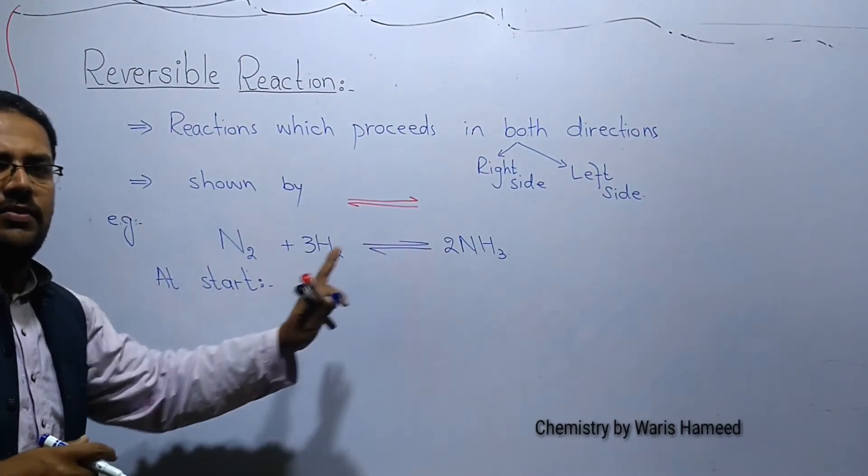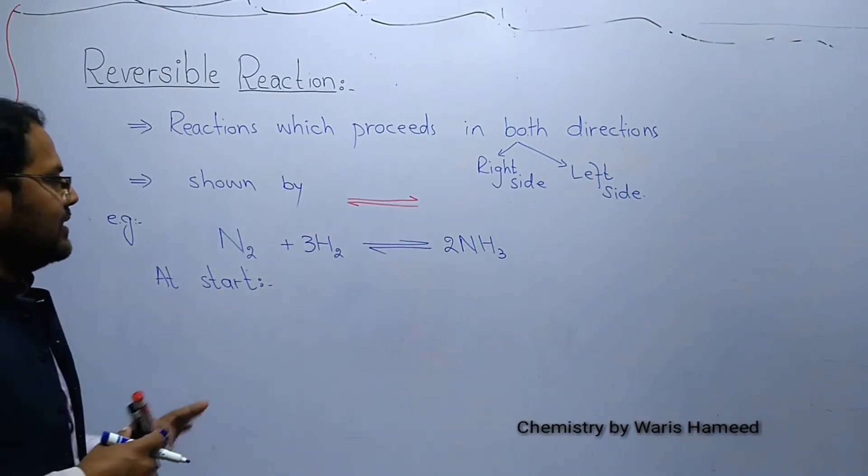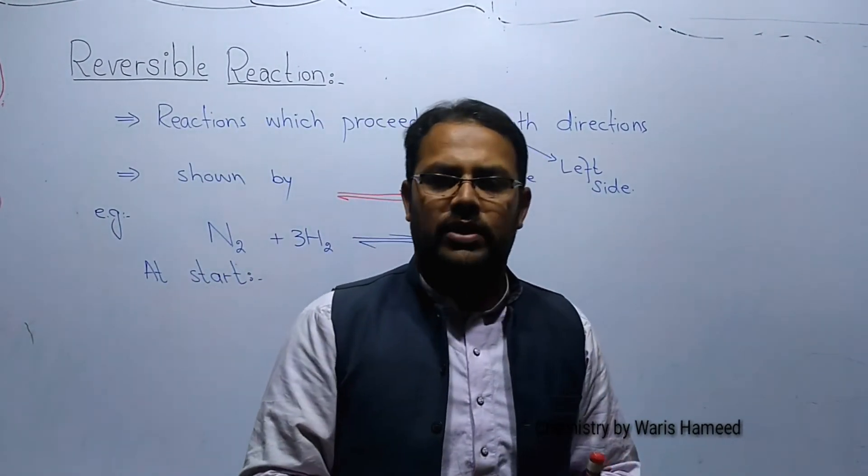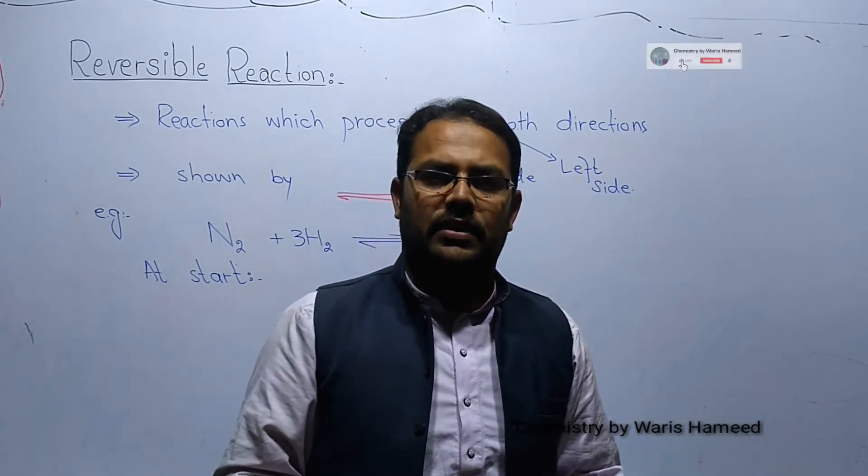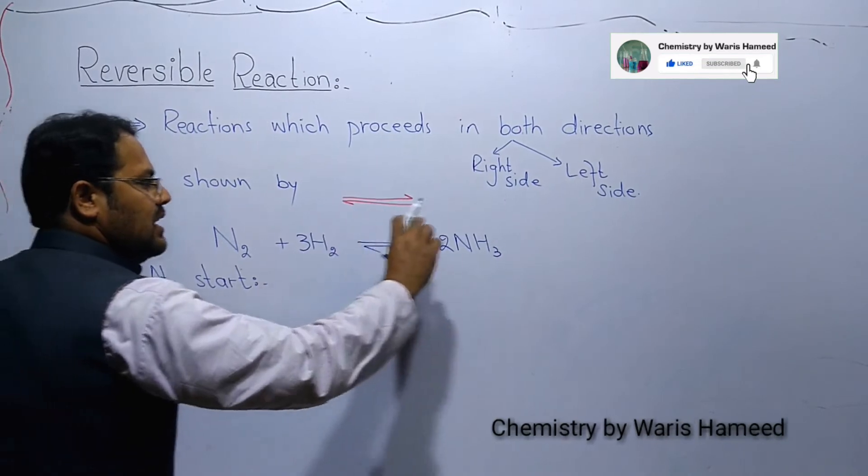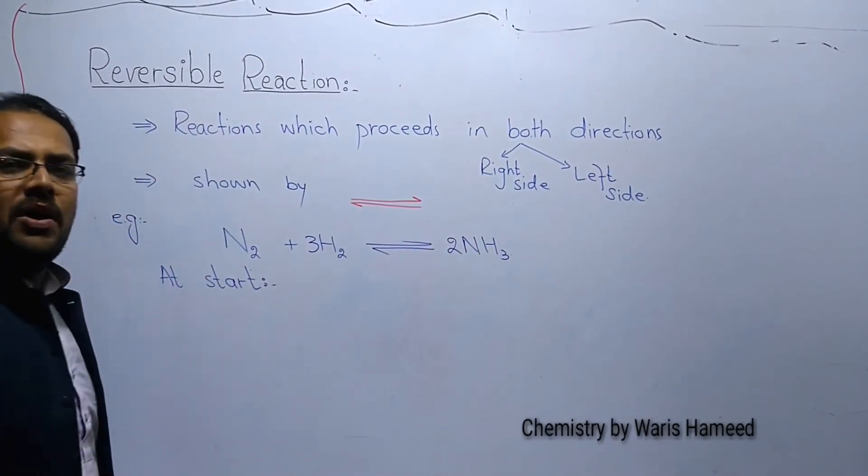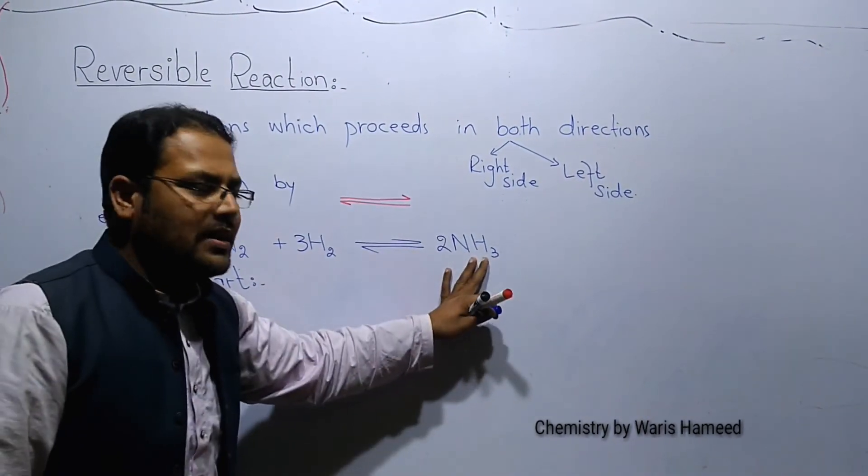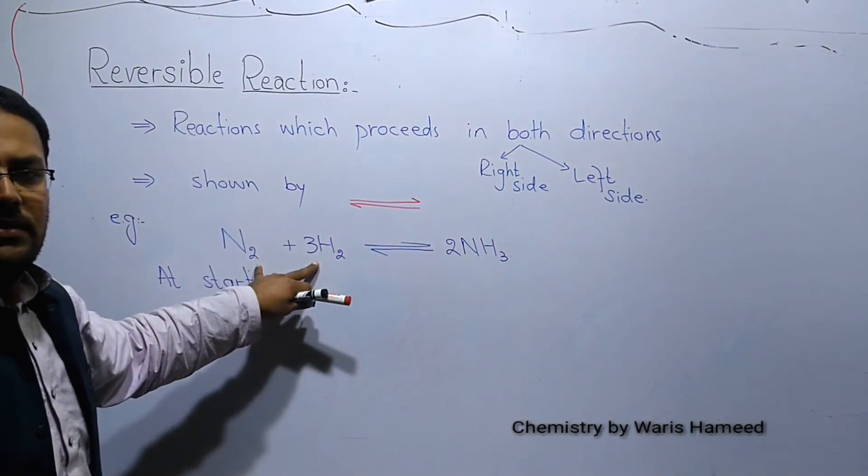We can say that the rate of forward reaction becomes equal to the rate of reverse reaction, and that mixture will contain these three things: the product (ammonia) and the two reactants (nitrogen and hydrogen).